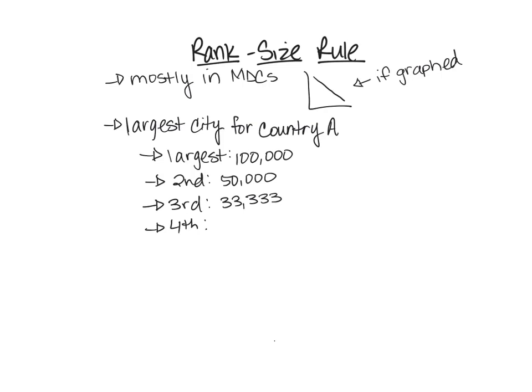The fifth largest city would be a fifth of the largest city's population — 20,000 — and it keeps following that pattern. So the tenth largest city would be about 10,000, one-tenth of the largest. That's the rank size rule pattern, and it won't be exact but it will be close.